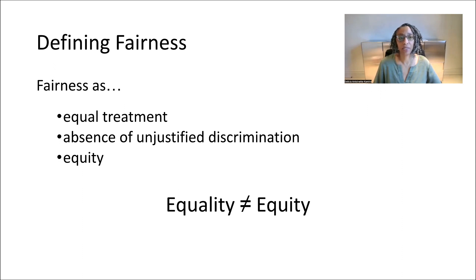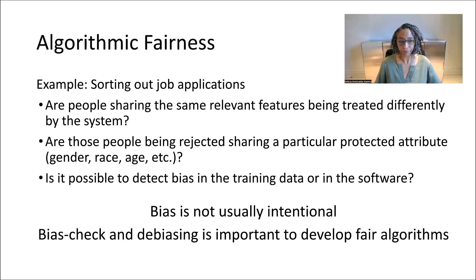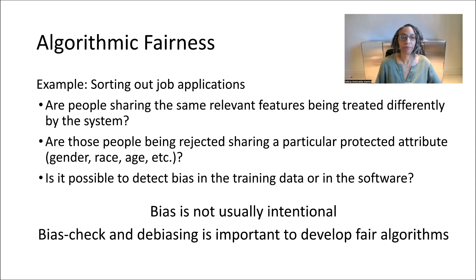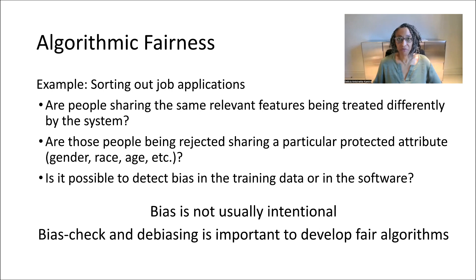To apply this idea to algorithmic fairness, consider the following illustration. Imagine a variety of people apply for the same job, and many of the applicants fulfill the same exact requirements. They have all the same qualities and share similar eligibility characteristics, such as education level and years of experience. An AI system is used to sort out applications of those whose qualifications do not fit the job. You would expect that applicants who do fulfill the job requirement would pass the first selection round and move on to the second selection, where they may be invited to an interview.